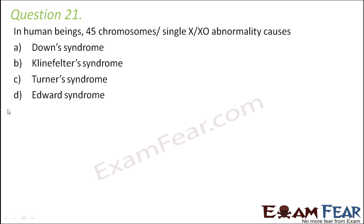Question number 21: In human beings, 45 chromosomes with a single X (XO) abnormality causes which syndrome? Whenever there is an absence of an X chromosome, partly or completely, in females, that syndrome is Turner syndrome. Down syndrome is trisomy 21; Klinefelter syndrome is 47 chromosomes due to XXY; Edwards syndrome is an extra copy of chromosome 18. Turner syndrome is where there is absence of an X chromosome, partly or completely.